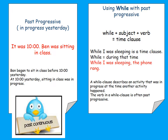Let's take a look at this example. It was 10. Ben was sitting in class, which means that Ben began to sit in class before 10 yesterday. At 10 yesterday, sitting in class was in progress. So we can all agree that the past progressive form is used to show an action that was in progress yesterday.